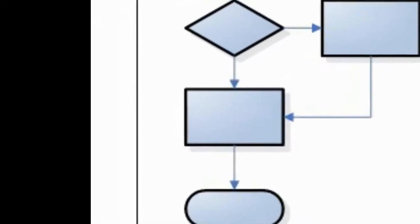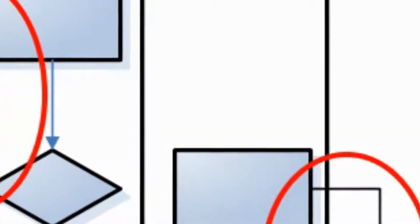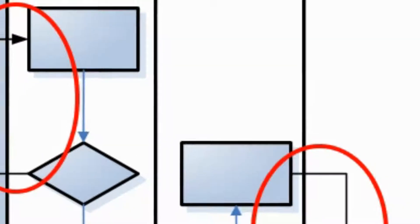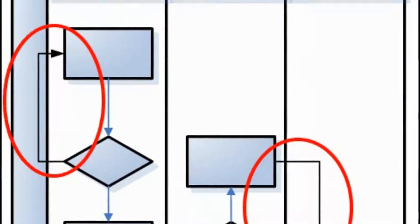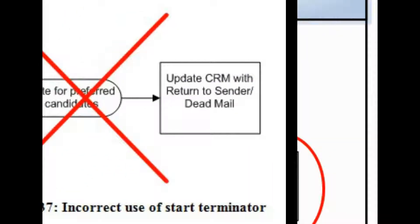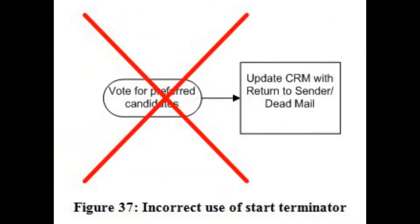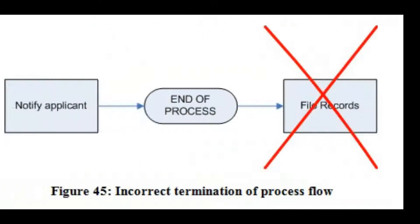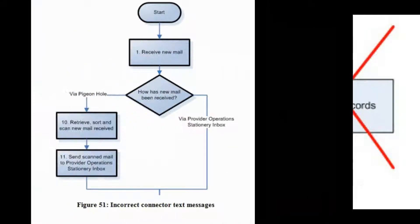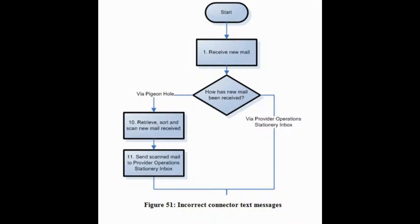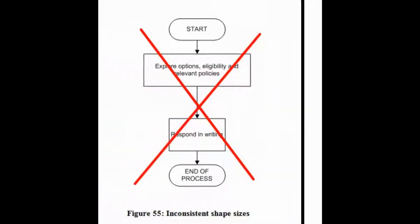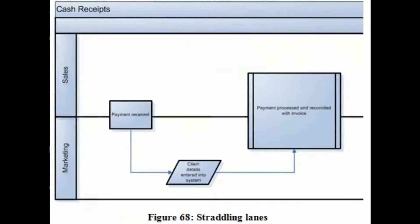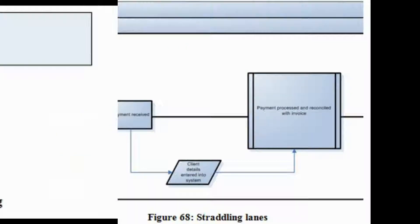As an analysis tool, a process map enables the process analyst to examine and evaluate the process and determine how it can be improved — by looking at the number of handoffs, the number of steps within the process, and any bottlenecks,